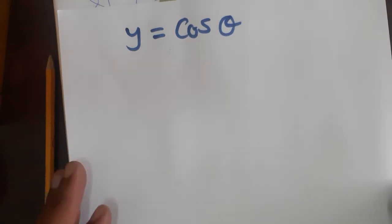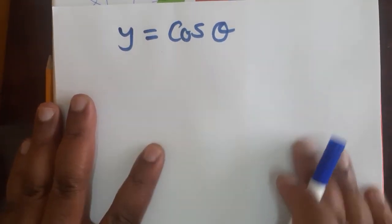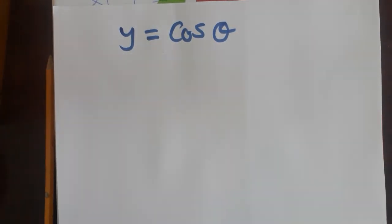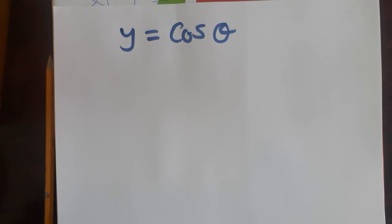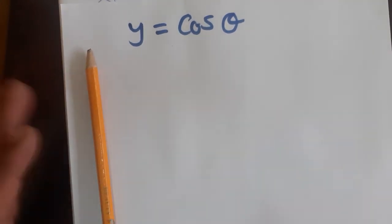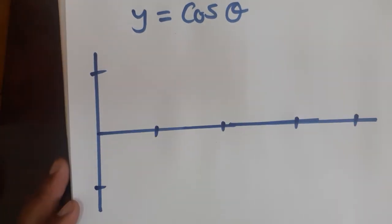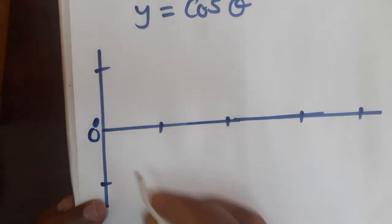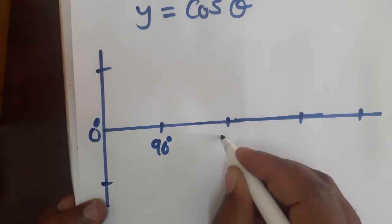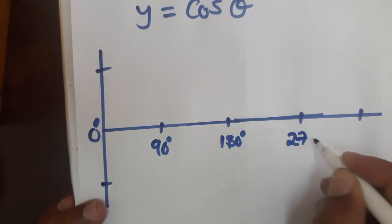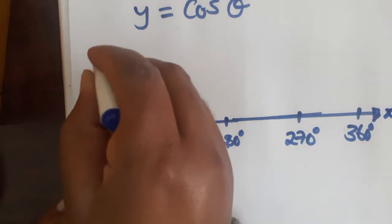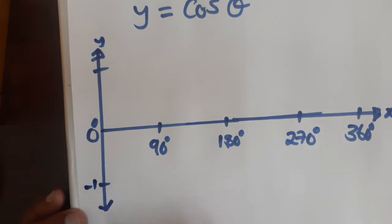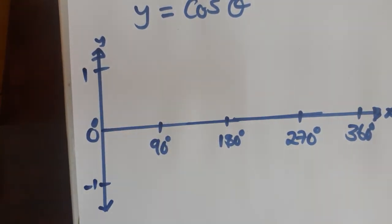Now we can deal with the cosine. So let's deal with the graph of cosine. We are going to say y equals cosine theta. Our range is still zero to 360 degrees. The procedure is the same — we draw the axes, marking zero, 90, 180, 270, and 360 degrees on the x-axis, and negative one to one on the y-axis.